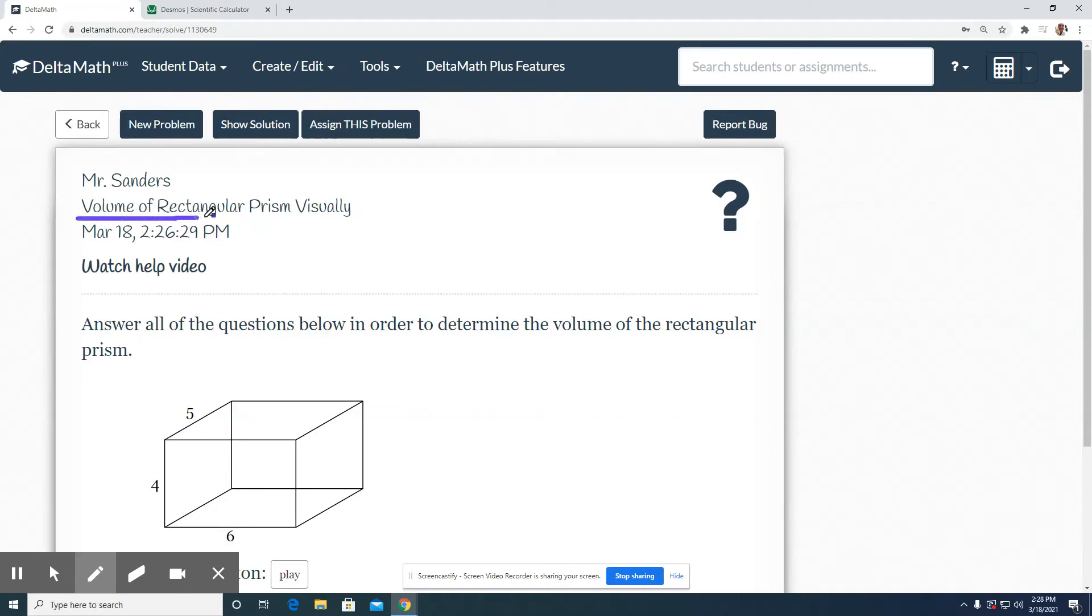We're doing volume of rectangular prisms visually. They're walking us through how to get through a volume problem, and that's talking about rectangular prisms. So volume - let's talk about each one of these. Volume is the space on the inside.